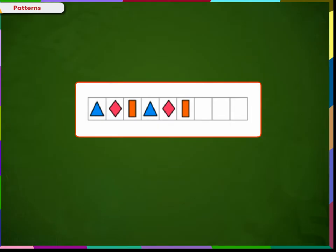Let us identify and complete this pattern. What will be the next three shapes? This is the pattern unit. So we can repeat this pattern unit. It is a blue triangle, pink diamond and orange rectangle. Correct!